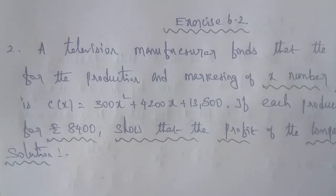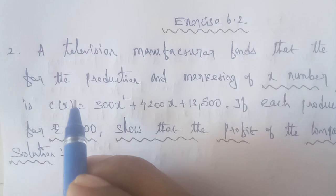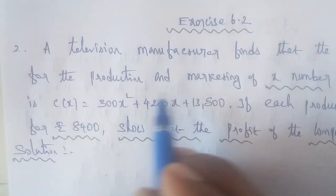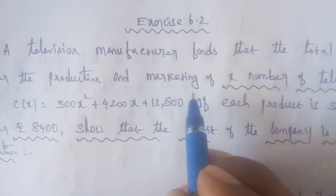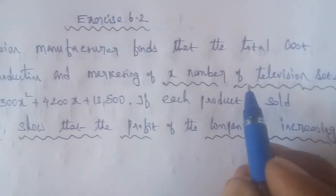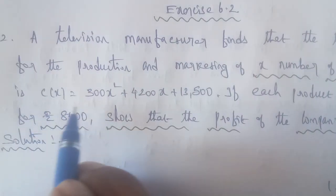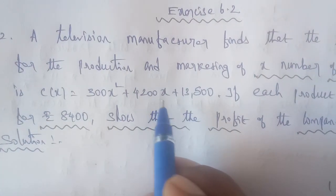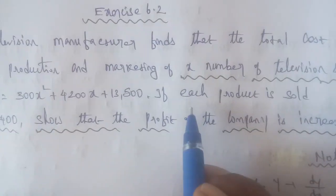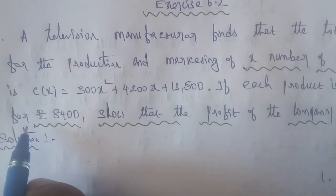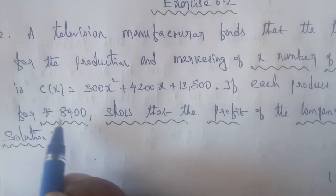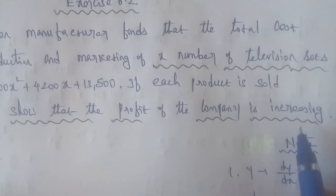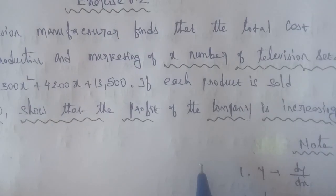Exercise 6.2, Q2. A television manufacturer finds that the total cost for the production and marketing of X number of television sets is C of X equals 300X squared plus 4200X plus 13500. If each product is sold for Rs. 8400, show that the profit of the company is increasing.